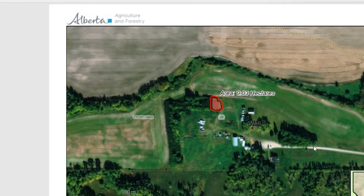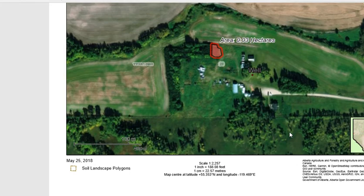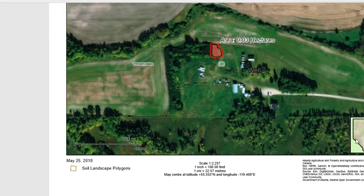Once the image has loaded, you can see your map along with your markup, and with some valuable information on the bottom — such as where in Alberta your farm is located, a scale, and some other information.